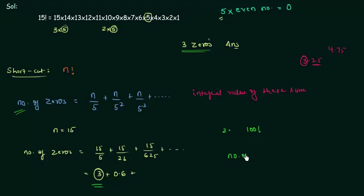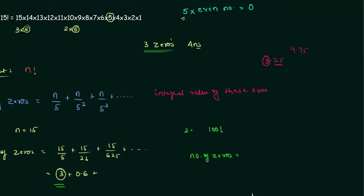So number of zeros is equal to, in this case n is 100. So 100 by 5 plus 100 by 25 plus 100 by 625. 100 is smaller than 625 so we can stop here because we want integral value. 100 by 5 is 20 and 100 by 25 is 4. So we are having 24.